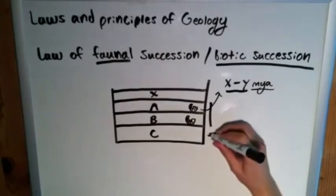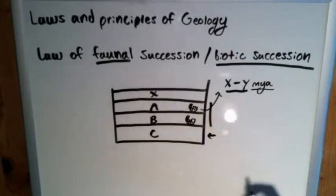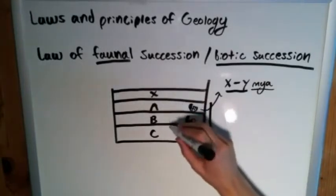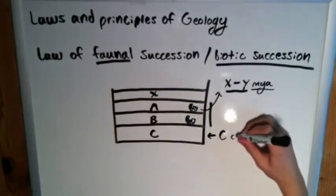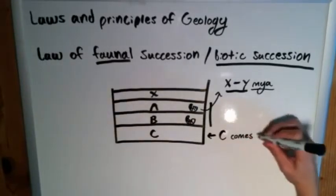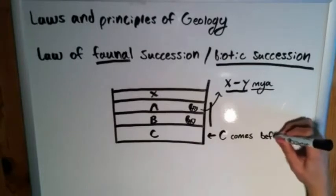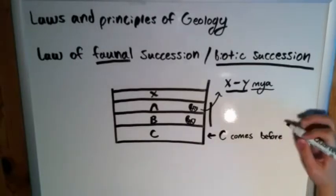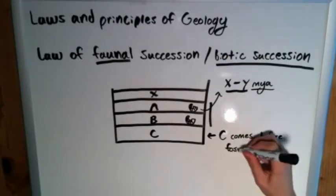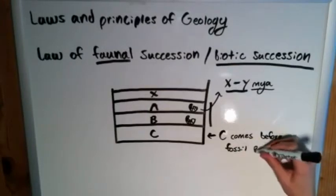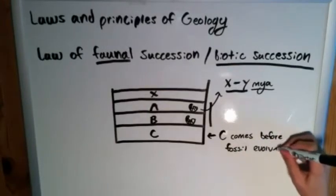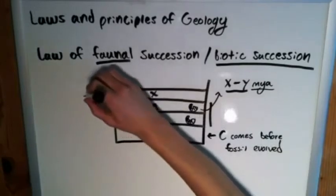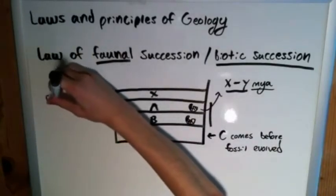Meanwhile, C, combining the law of superposition, since we know it is older than both A and B, we can assume that C comes before this fossil existed, before it was evolved, and X comes from a time when the fossil is extinct.